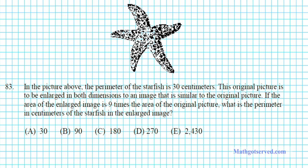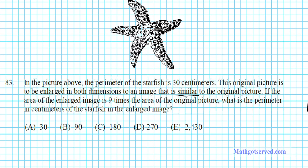Let's take a look at problem 83. It says in the picture above the perimeter of the starfish is 30 centimeters. This original picture is to be enlarged in both dimensions to an image that is similar to the original. If the area of the enlarged image is nine times the area of the original picture, what is the perimeter in centimeters of the starfish in the enlarged image? This is another problem on scale factor.